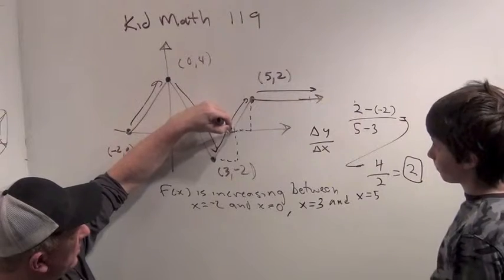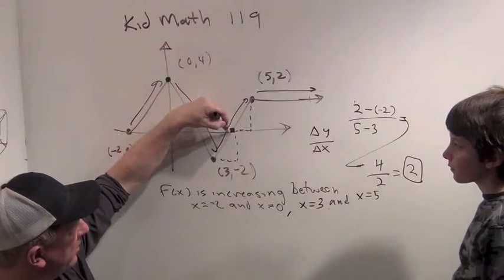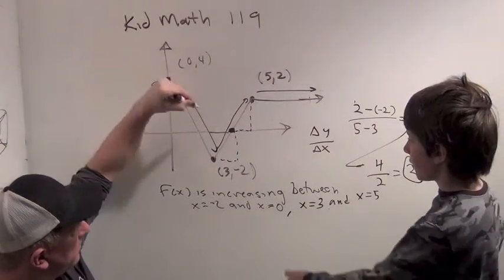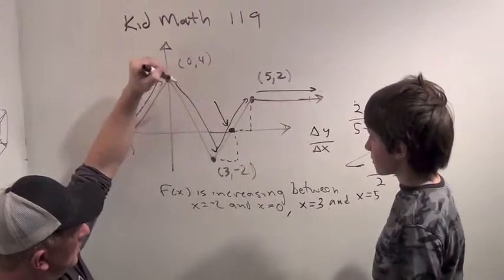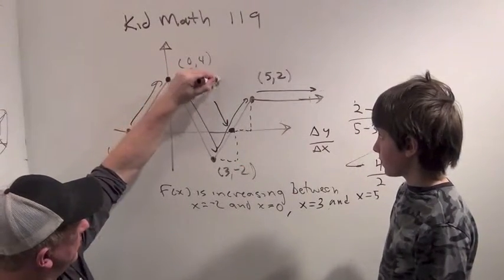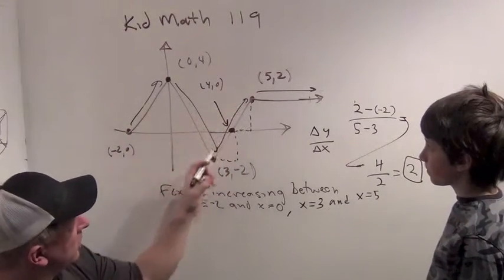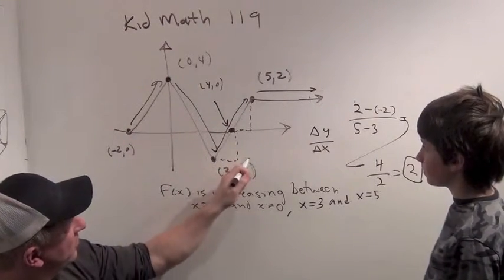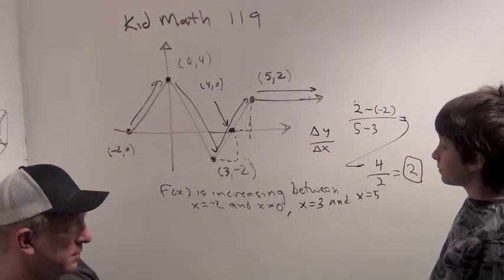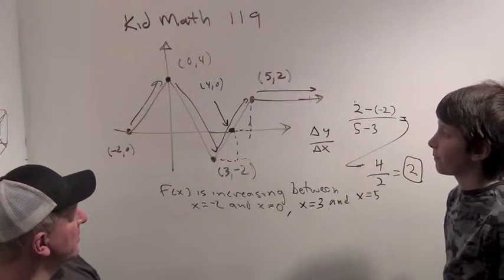So we actually can learn here that what is this point right here? That point, it's 4 comma 0. 4 comma 0. So we go over 1 to 4, go up 2. Over 1, up 2. And you can see for the whole line segment here, we went over 2 up 4. Hmm. Okay. That's pretty interesting.